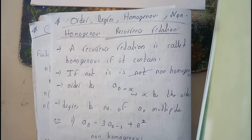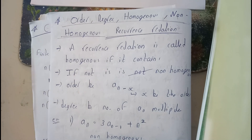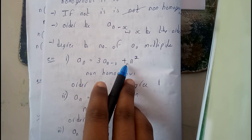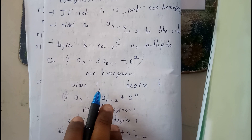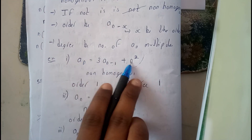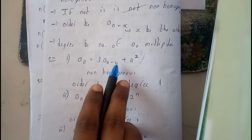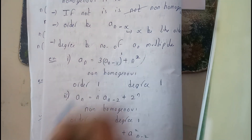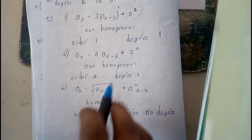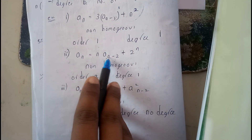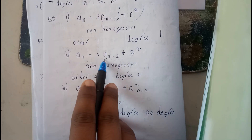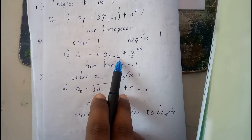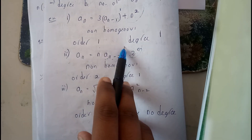Take the first example: a(n) = 3·a(n-1) + n². Here n² is an unknown term not expressed in terms of a(n), so this is a non-homogeneous equation with order one and degree one. The next example: a(n) = n·a(n-2) + 2^n. It is also non-homogeneous as 2^n is present, with order two and degree one.